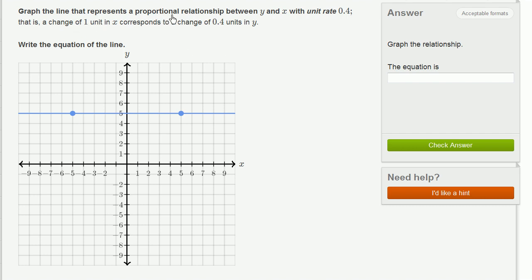Graph the line that represents a proportional relationship between y and x with unit rate 0.4. That is, a change of one unit in x corresponds to a change of 0.4 units in y. And they also ask us to figure out what the equation of this line actually is.